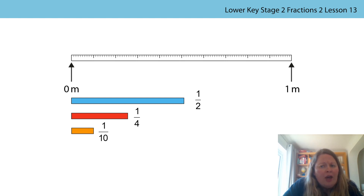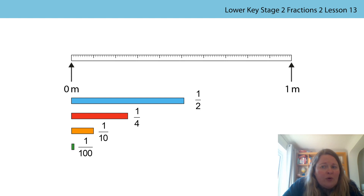How many equal parts would make one whole if my unit fraction is one tenth? You're right — there will be ten equal parts. How many equal parts would make one whole if my unit fraction is one hundredth? You're spot on — there will be one hundred equal parts.